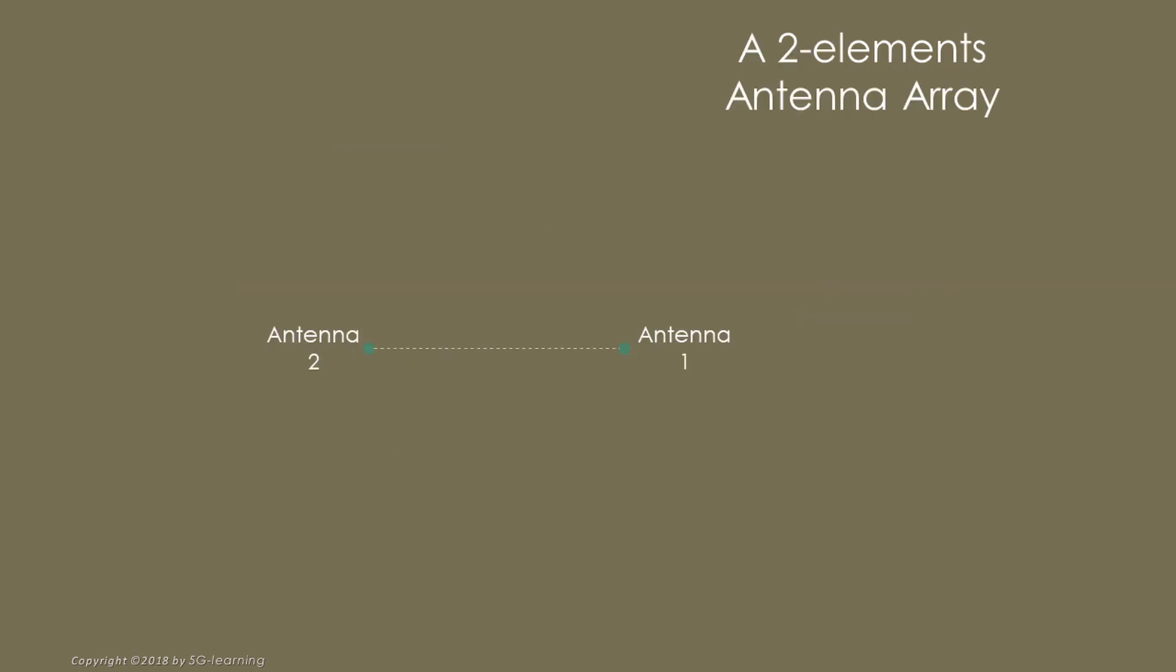Let's consider a couple of omnidirectional antennas. We will call this set an antenna array. This animation shows a wave arriving at the array.